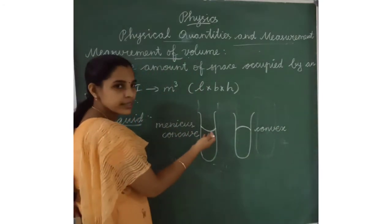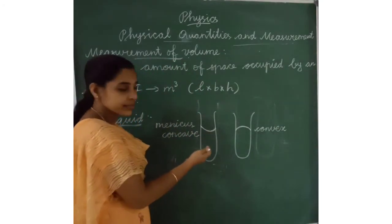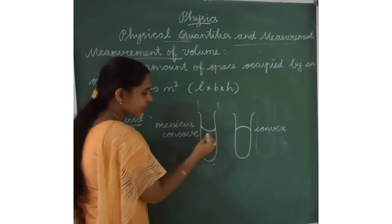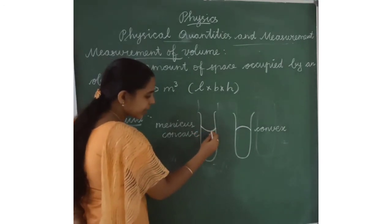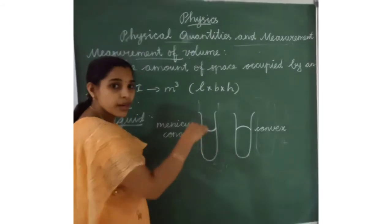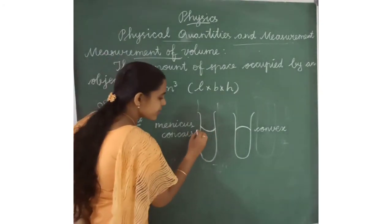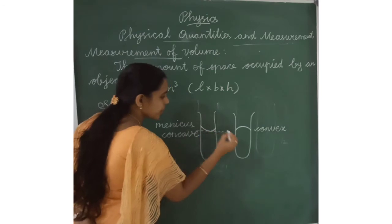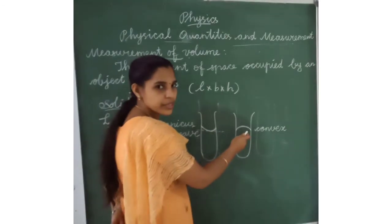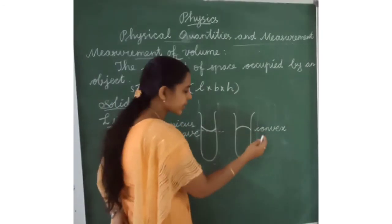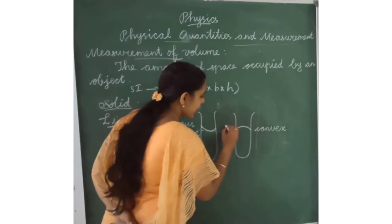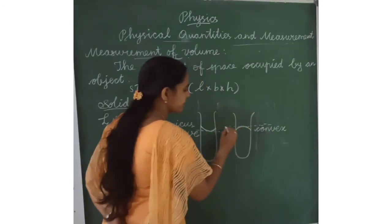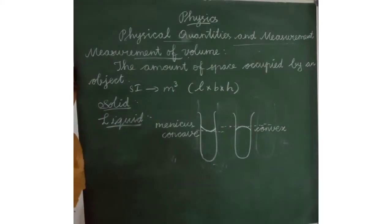How do we take the correct reading? In the concave meniscus, we have to find the reading at the bottom of the curve. In the convex meniscus, we find the correct reading at the top of the liquid.